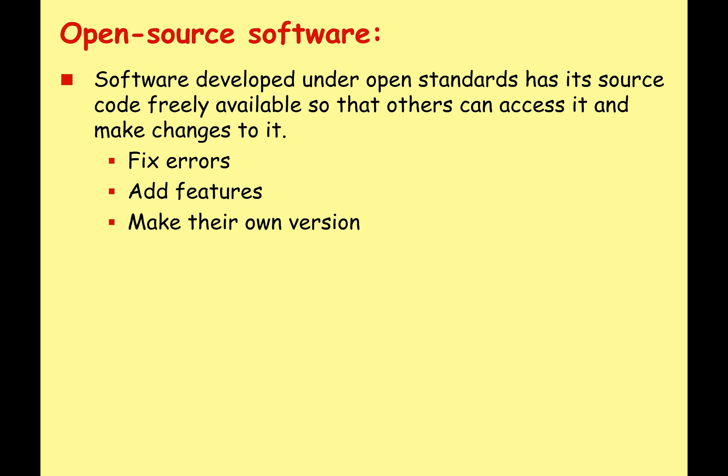Let's contrast that with open source software. Software developed under open standards has its source code freely available so others can access it and make changes. As well as downloading the release code and running it on your computer, you can also download and look at the source code. You can change it to fix any errors or bugs, pay somebody else to do it, add extra features, make your own version of the software, upload it to the internet, and let other people download your new and improved version.